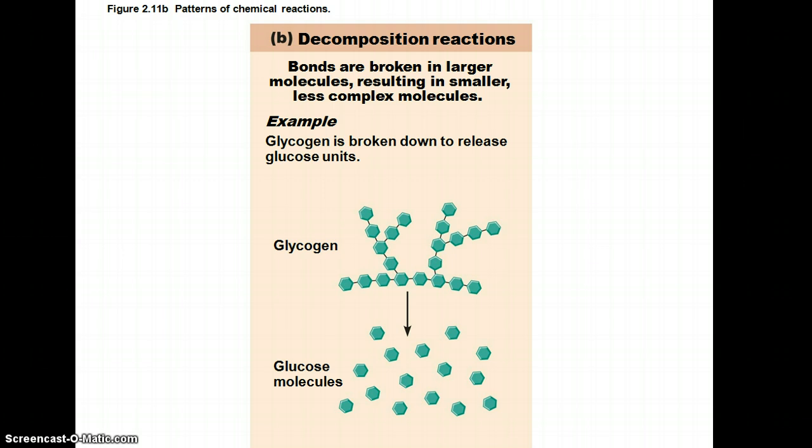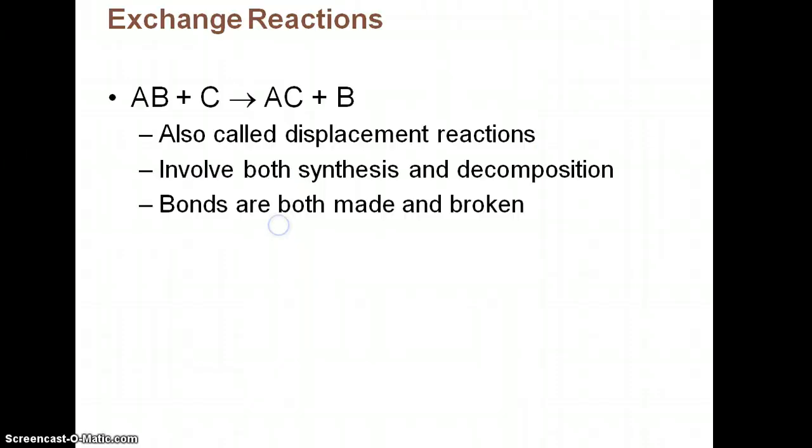A decomposition reaction example: we store glycogen in our liver, and whenever our glucose levels get low, we can actually break down that glycogen. So we're starting with a larger molecule and breaking it down into individual glucose molecules.